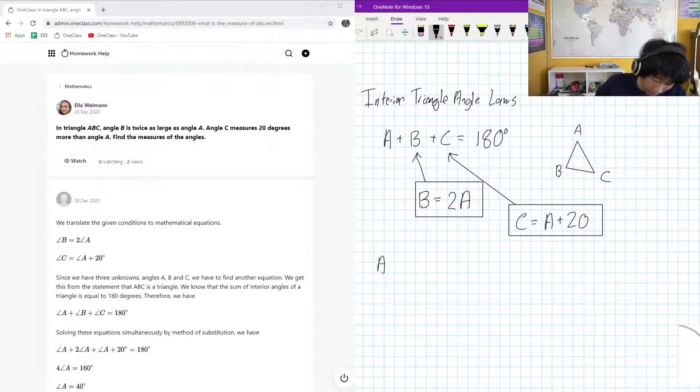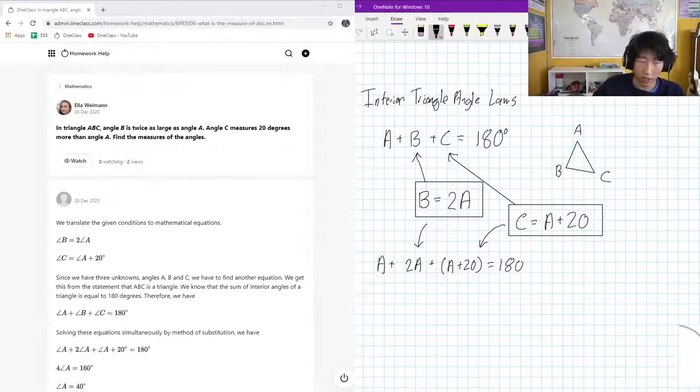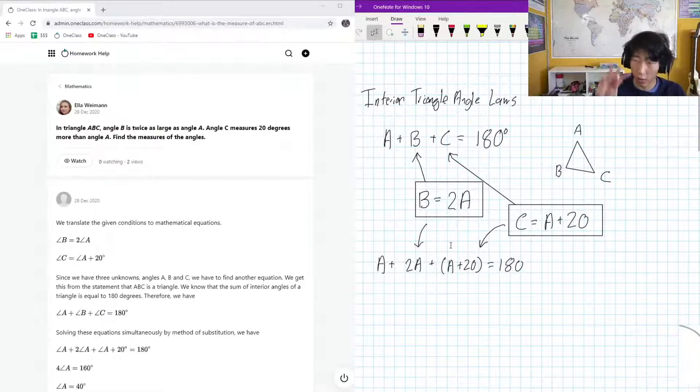So it's going to be A plus 2A, and that came from the B, plus, and in brackets just so it's super clear, A plus 20 is equal to 180. And of course that A plus 20 came from the C term right here. So let's do some expansion with this. So A plus 2A plus the A in here, that's four A's.